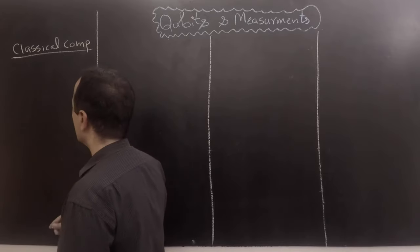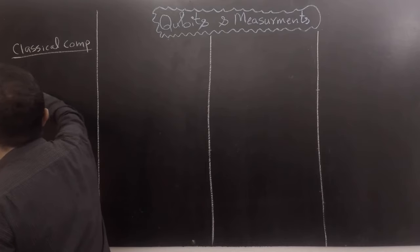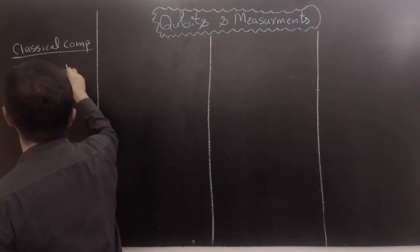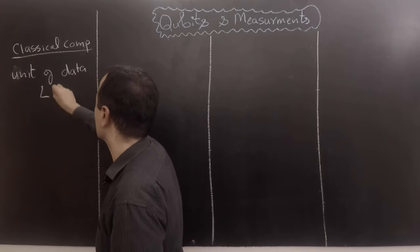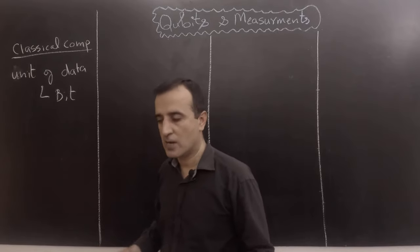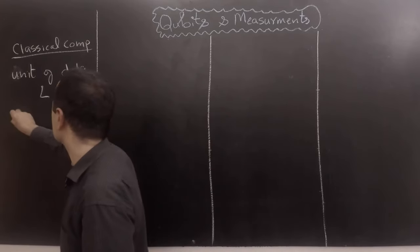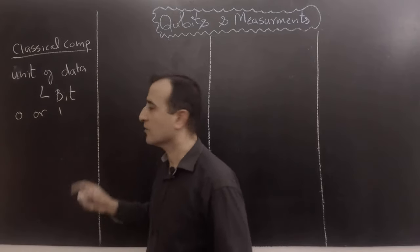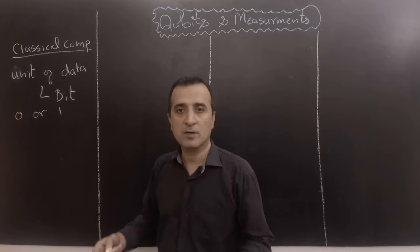The basic unit of data on classical computers is called a bit. A bit can store either a value of zero or a value of one. In contrast to that, we have quantum computers. In quantum computers, we have quantum bits.